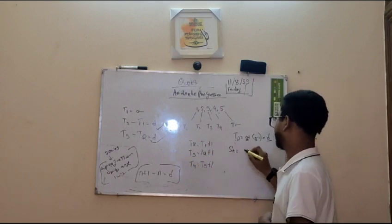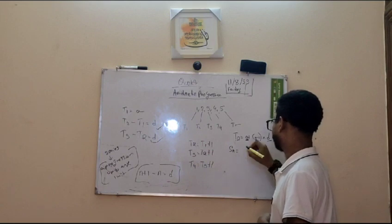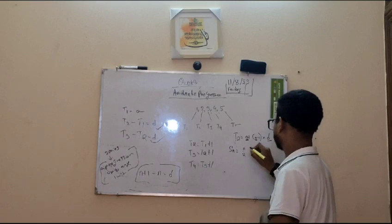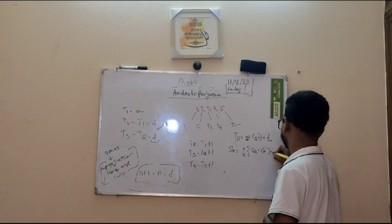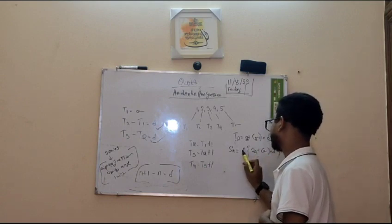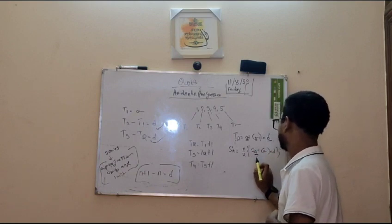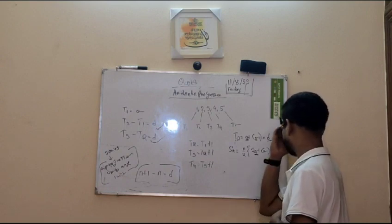What is the formula of SN? SN, the formula is N by 2, 2A plus N minus 1 into D. Again, N is the number of terms. A is the first term. N is the number of terms minus 1 into D, which is the common difference.